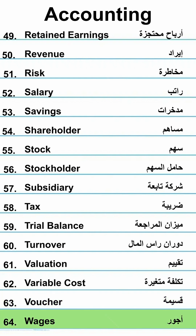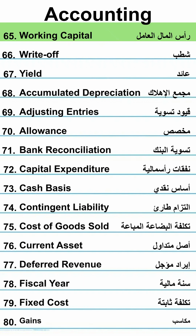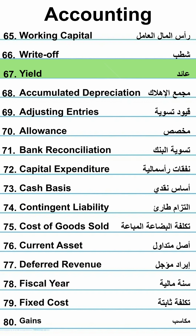Trial balance. Working capital — Rأس المال العمل. Write-off — Shatp. Yield.